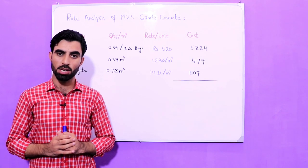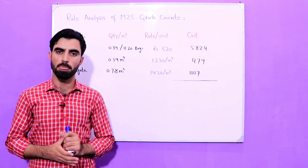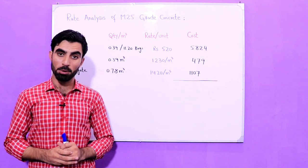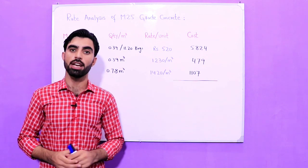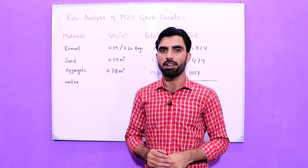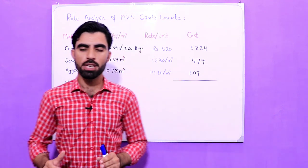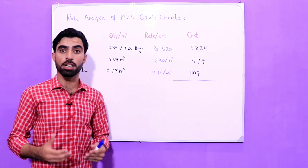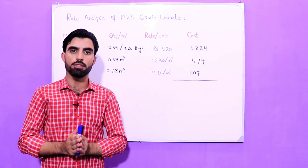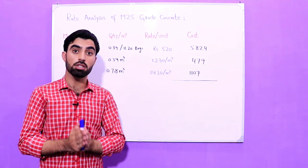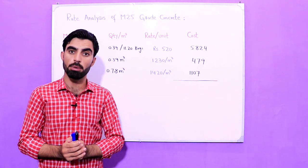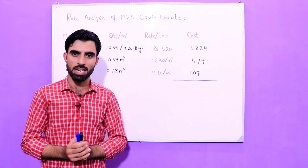Assalamualaikum guys, welcome back to Civil Engineers YouTube channel. How are you everybody? I hope everybody will be fine. So let's start the topic for today, and the topic is rate analysis for M25 grade of concrete. From this rate analysis you are able to find the quantity of concrete for M25 — whether that is a slab, column, beam, or any concrete structure.